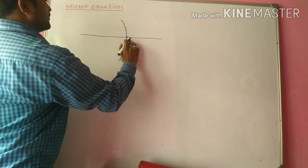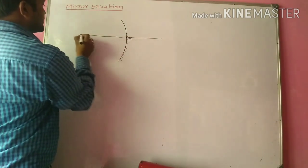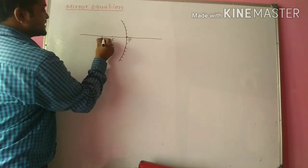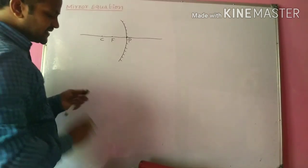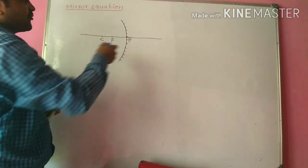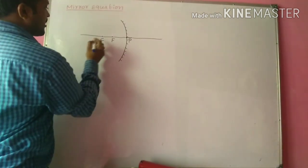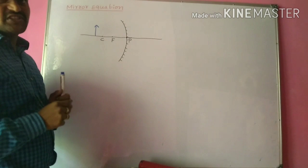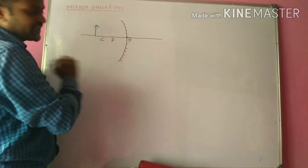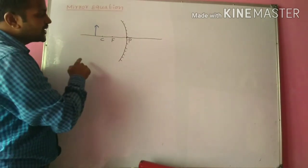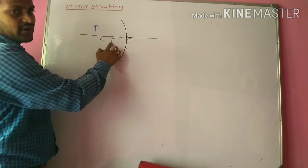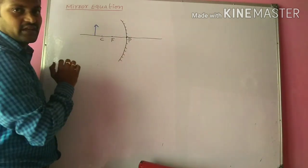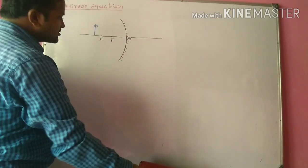This is the pole, this is the principal axis. F is the principal focus and C is the center of curvature. Let us consider an object placed in front of this concave mirror, beyond the center of curvature — that means object distance is greater than the focal length. The distance between pole and principal focus is called focal length. When object distance is greater than focal length, the concave mirror gives a real and inverted image.